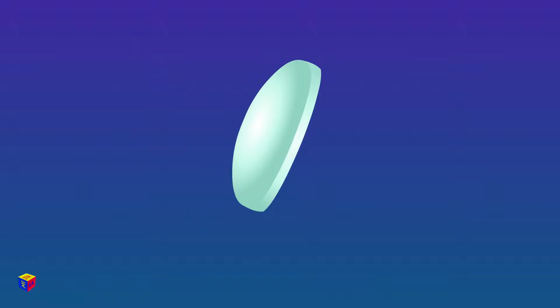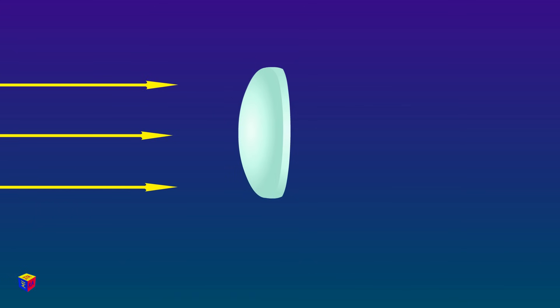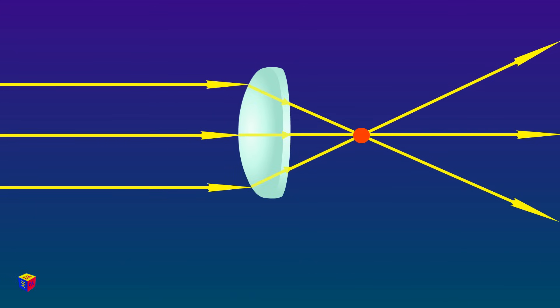This type of lens is also called a collecting lens because the rays of light going through it gather at one point. This point is called the focus, or focal point.